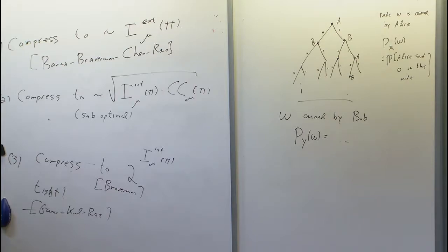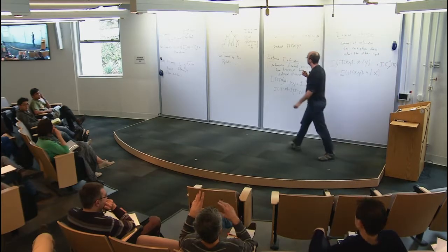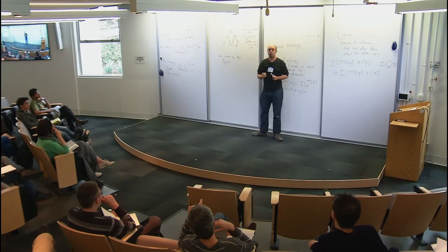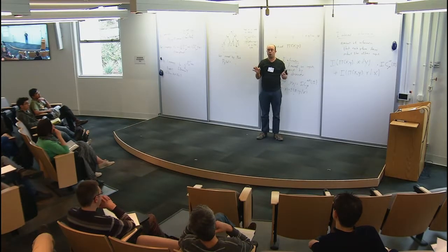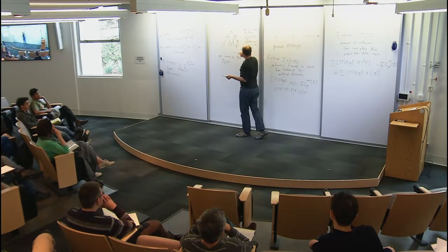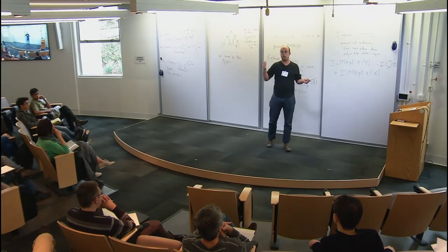In response to a question: ω is not a random variable — it's any fixed node in the tree, and we assign a number between 0 and 1 to every node. Given that we are at node ω and the input is x, P_X(ω) is the probability that the next bit sent is zero. Node ownership is specified in advance — e.g., Alice sends the first bit, Bob sends the second, and so on.